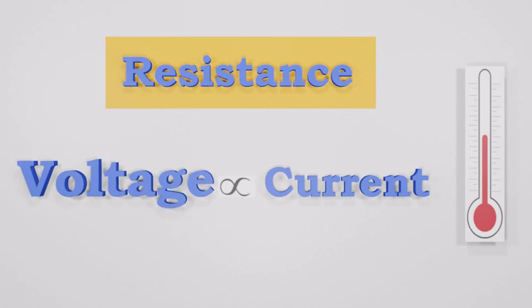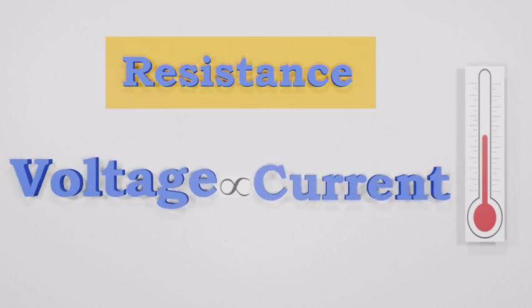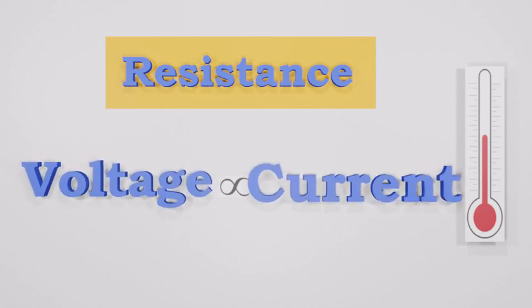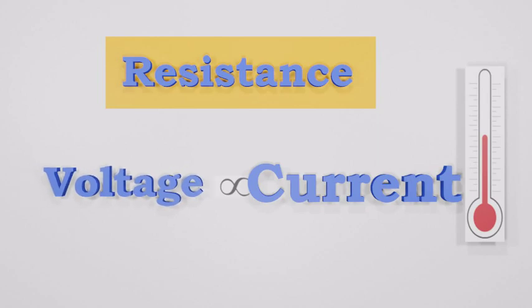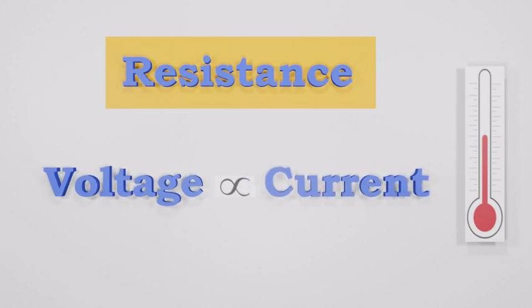If voltage goes up, then the current also goes up at the same factor. If the voltage goes down, then the current goes down by the same factor.